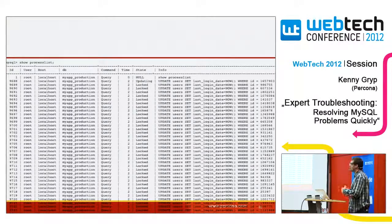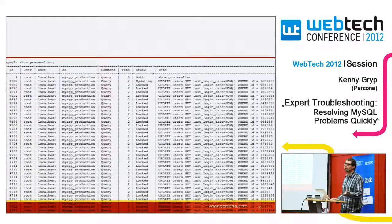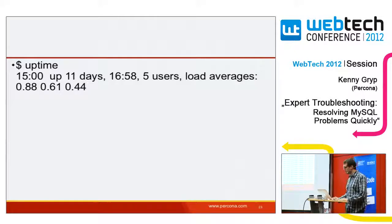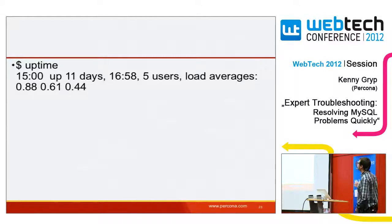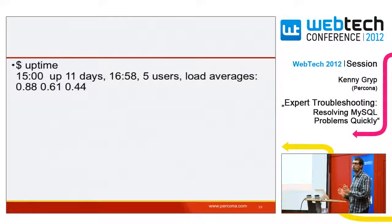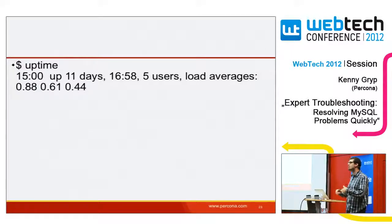There are a lot of causes to this — it could be slow IO or a very large table where updating secondary indexes takes a long time. If you look at uptime and load average, it's still 0.88 on the one-minute average, which is still pretty low. So if you only looked at load average, you'd say the database is not a problem. We need more information.